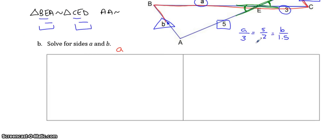So to solve for A, we're going to cross multiply this ratio with this ratio. So 3 times 5 is 15, A times 2 is 2A, divide both sides by 2, and you get A is 7.5.